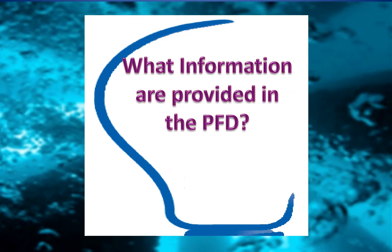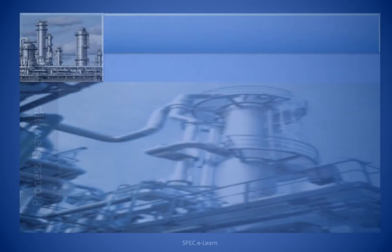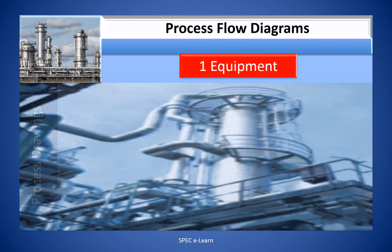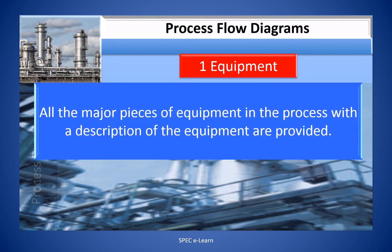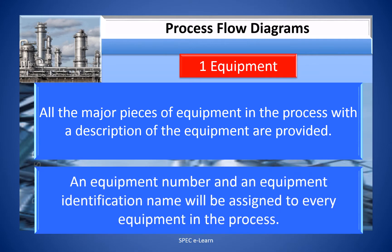The contents of the PFD include first the equipment. All the major pieces of equipment in the process with their description are provided. An equipment number and an equipment identification name will be assigned to every equipment in the process. The equipment may be a reactor, a distillation column, a pump or a heat exchanger. Since there could be more than one such equipment in a process, they are assigned a unique identification number so that throughout the process this unique number can be used to track the specific equipment easily.